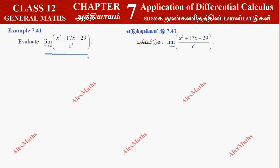So, the limit extends to infinity. If we get x to infinity, the numerator is infinity and the denominator is infinity. This is an indeterminate form.